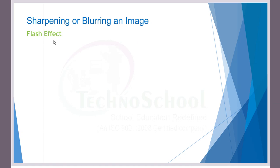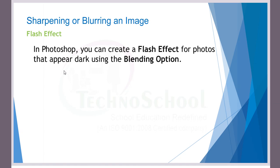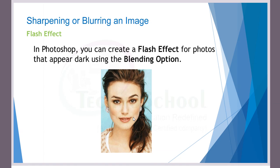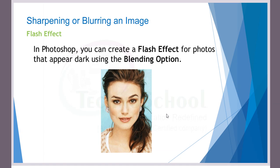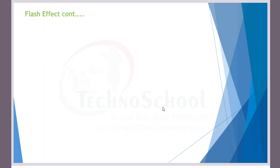Under sharpening or blurring, the first concept is the flash effect. In Photoshop, you can create a flash effect for photos that appear dark. Suppose your photo's appearance is dark — we can brighten it with the flash effect. See here: the first image is dark, and by using the flash effect we can make this image very light and bright. This is a great example of the magic you can do.